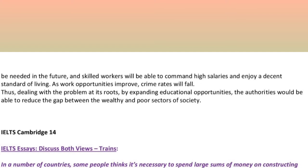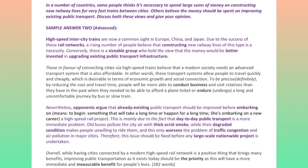Thus, dealing with the problem at its roots by expanding educational opportunities, the authorities would be able to reduce the gap between the wealthy and poor sectors of society. In a number of countries, some people think it is necessary to spend large sums of money on constructing new railway lines for very fast trains between cities. Others believe the money should be spent on improving existing public transport. Discuss both these views and give your opinion. Advanced high-speed intercity trains are now a common sight in Europe, China and Japan. Due to the success of these rail networks, a rising number of people believe that constructing new railway lines of this type is a necessity.